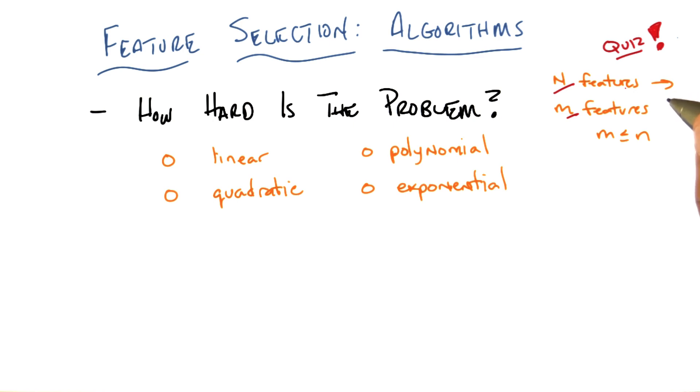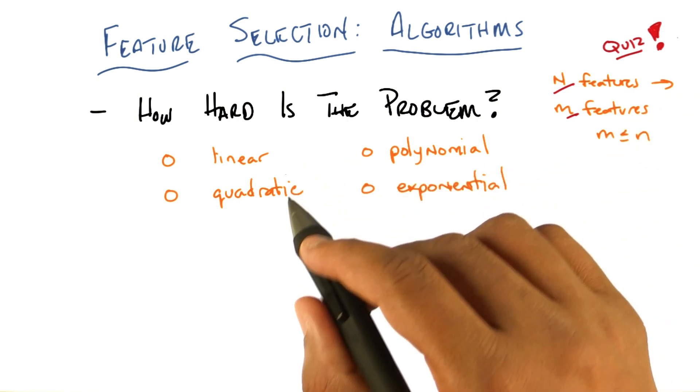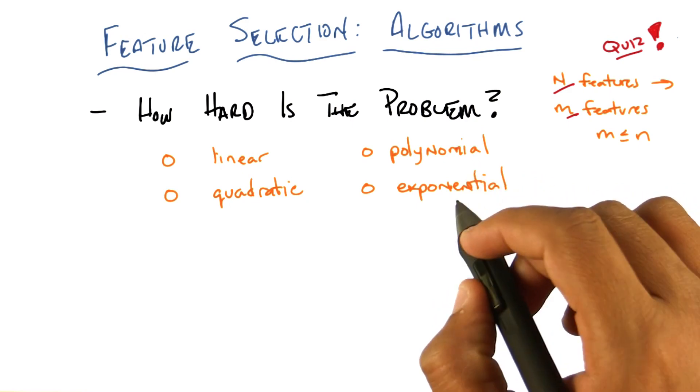And so what I want you to be able to tell me is given this generic problem of starting with n features and finding a subset of m features, how long does it take in terms of time complexity to do? Is it linear, quadratic, polynomial, or exponential in n?